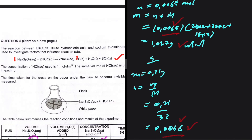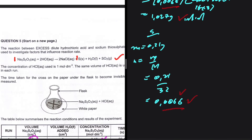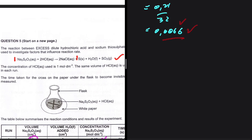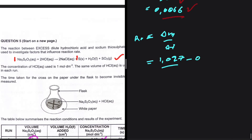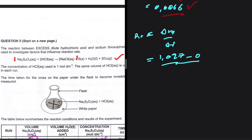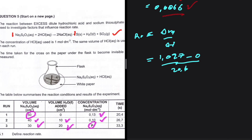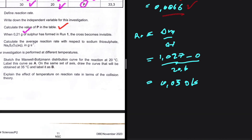Since all the sodium thiosulfate was used in run one, its mass goes to zero. The reaction rate equals the change in mass divided by the change in time. We started with 1.027 grams and ended with zero, so change in mass is 1.027 g, divided by 20.4 seconds. The result is 0.05 grams per second — that is the reaction rate with respect to sodium thiosulfate.